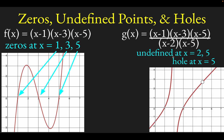Let's see what the graph of this function looks like. The function is supposed to be undefined at x equals 2 — indeed you can see it builds up to infinity coming from the left and down to negative infinity coming from the right. Then we have a hole at x equals 5. Left over in the numerator, besides the factor of x minus 5, we have x minus 1 and x minus 3, so we should have zeros at x equals 1 and x equals 3. And if you look at the graph, there they are — the zero at x equals 1 and the zero at x equals 3.